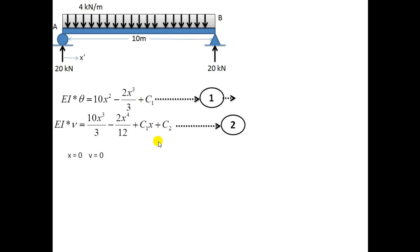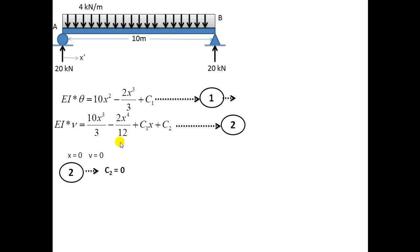Now I will find the values of C1 and C2. After finding these values, I can find the deflection and slope at any point in this beam. To find C1 and C2, I will use boundary conditions. Boundary conditions mean that at the ends and at the mid-point, what is the value of slope and deflection. At the start, x is equal to 0 and deflection is equal to 0; putting these two values into equation 2 gives C2 equal to 0. Taking x equal to 5, the slope will be 0 at that point.